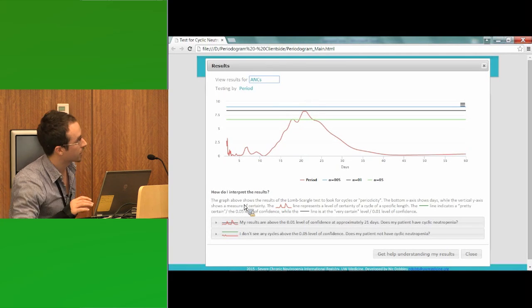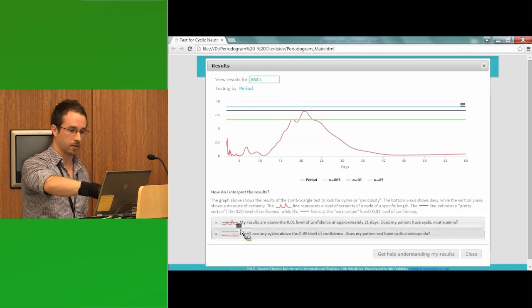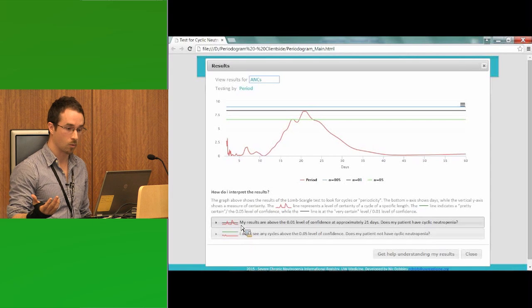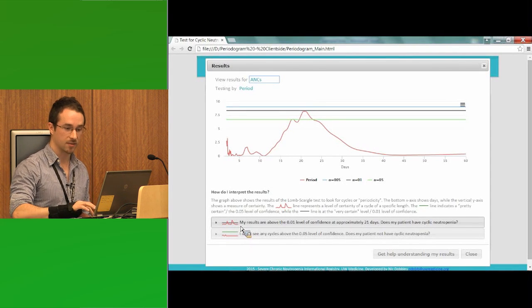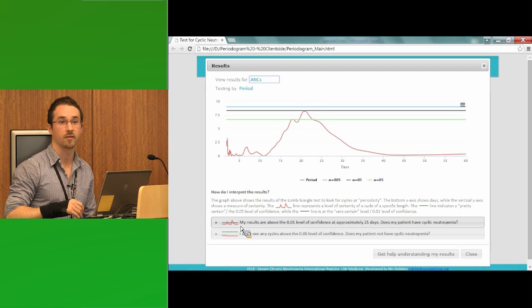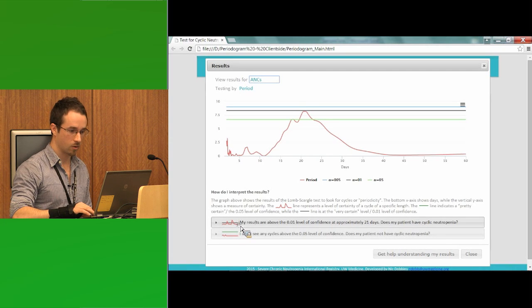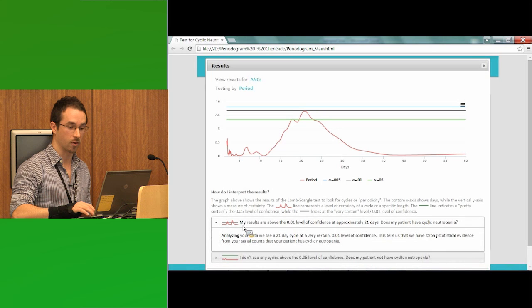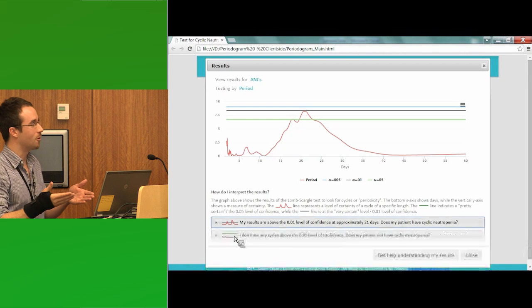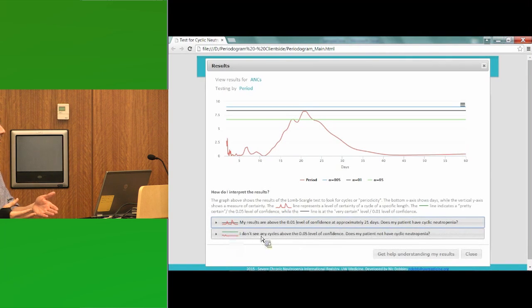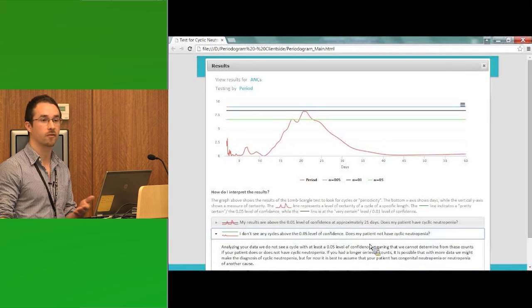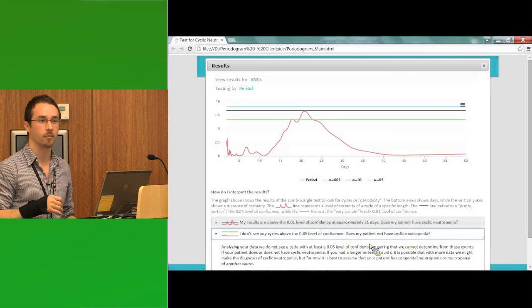We've got our tiny little diagram, hopefully you can see it, that has the red line going over the black one right down here. And it says, my results are above the .01 level of confidence at approximately 21 days. Does my patient have cyclic neutropenia? You can click that and we say, well, statistically there appears to be evidence that they do. Or maybe I don't see anything above the .05 level of confidence. Does my patient not have cyclic neutropenia? And we don't want to say, well, yes, you do. No, you don't. There are a lot of reasons that we want to avoid that. But we do say, well, statistically it doesn't appear so. But if you give us more data, if you give the app more data, maybe that answer would change.